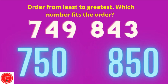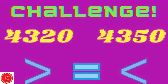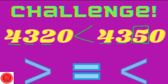Which number fits the order? The smallest number is 750, so the next number has to be bigger than that — so it can't be 749, it has to be 843. Here is a challenge: we have a four-digit number, so that means this first number represents the thousands place. The same number is there, so let's go to the hundreds place, then the tens place. Five is bigger than two, so the mouth wants to eat this number. So 4320 is less than 4350.